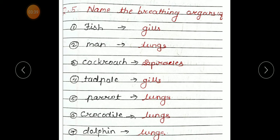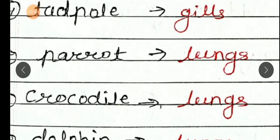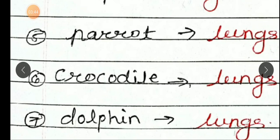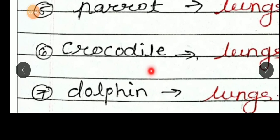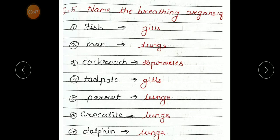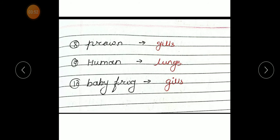Parrot, lungs. Crocodile, lungs. And dolphin, lungs. Prawn, gills. Human, lungs. And baby frog, gills. And adult frog, lungs. Baby frog, gills.